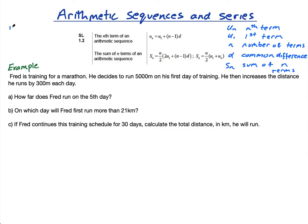Let's say we do 10, 13, 16, 19, etc. This is an arithmetic sequence because it's going up in threes — 10 plus 3 is 13, plus 3 is 16, plus 3 is 19. An arithmetic series is just when we add them: 10 plus 13 plus 16 plus 19. We're given two formulae in the formula booklet — the nth term of an arithmetic sequence, and the sum of n terms, which is the sum of an arithmetic series.